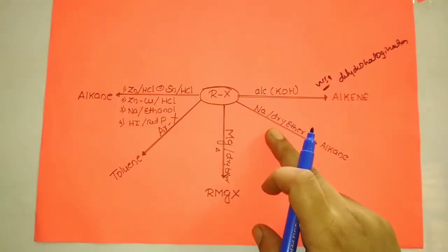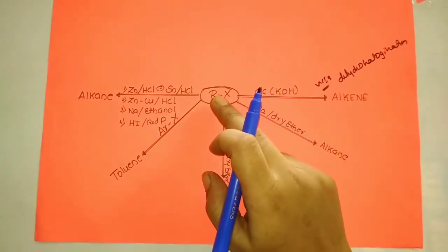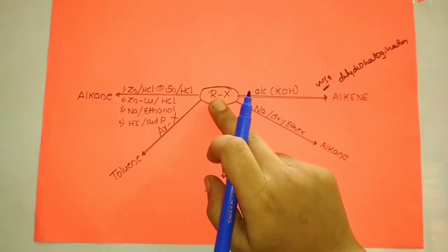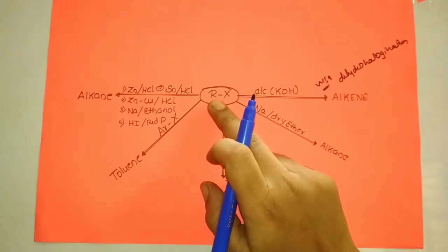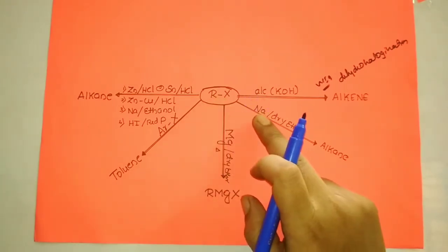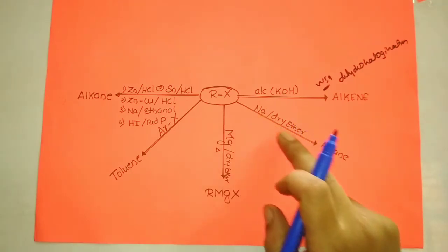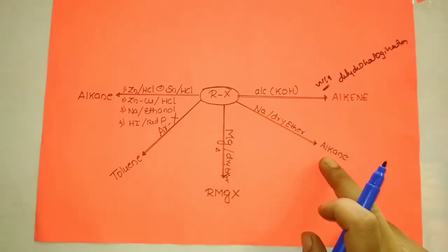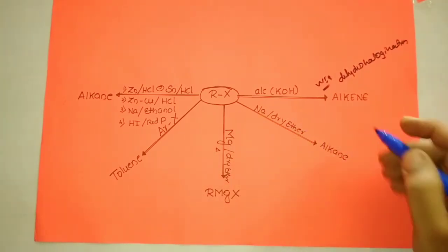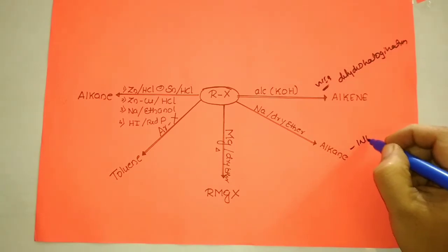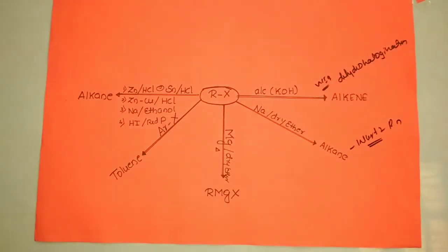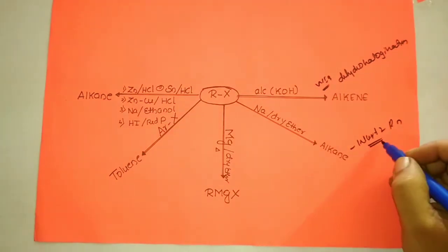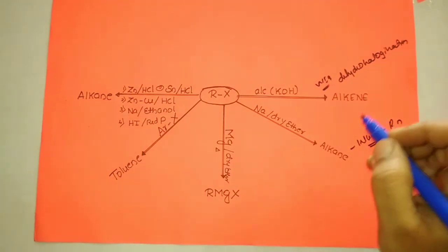When excess alkyl halide — two molecules — is treated with sodium in the presence of dry ether, we get an alkane, and this reaction is called Wurtz reaction. This has been discussed in the previous video. The product is a higher alkane containing more carbon atoms than the reactant.